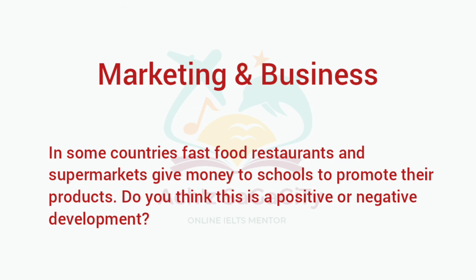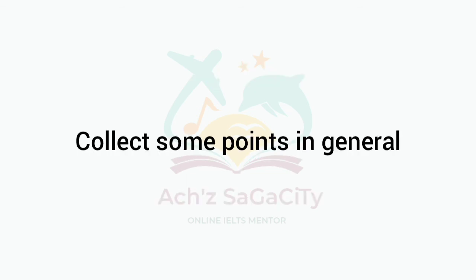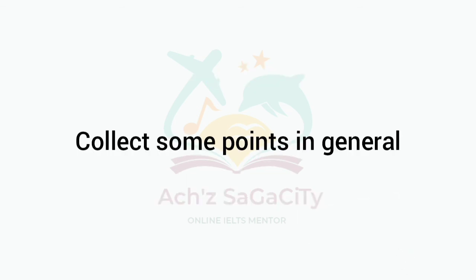Next topic: Marketing and Business. In some countries fast food restaurants and supermarkets give money to schools to promote their products. Do you think this is a positive or negative development? You can take one side or write about both positive and negative. Try to collect points for all these essays, subscribe and stay tuned for more updates.